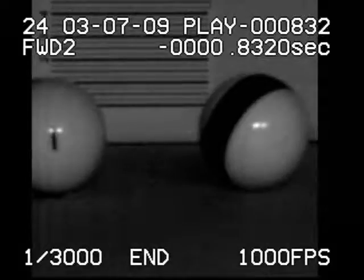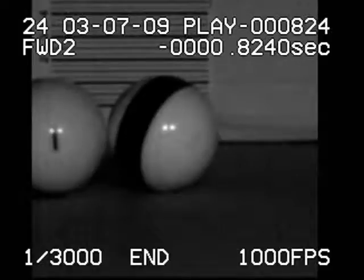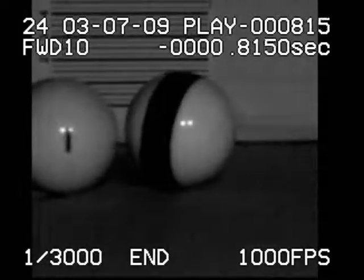In super slow motion, we can see what's going on. The rack of balls has a larger effective mass than the cue ball, so the cue ball does bounce back away from the rack.